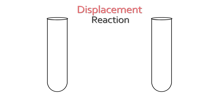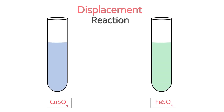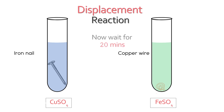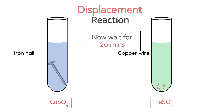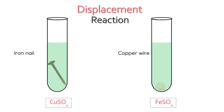Let's recall an activity which displays the displacement reaction. Take two test tubes. Pour copper sulphate solution and iron sulphate solution in each. Put an iron nail in the test tube that contains copper sulphate solution, and a copper wire in the test tube that contains iron sulphate solution. Leave the test tubes for 20 minutes. We will notice that the test tube with iron sulphate solution will show no changes, whereas the iron nail in the other test tube will gain a reddish coat and the color of the solution will change from blue to light green.